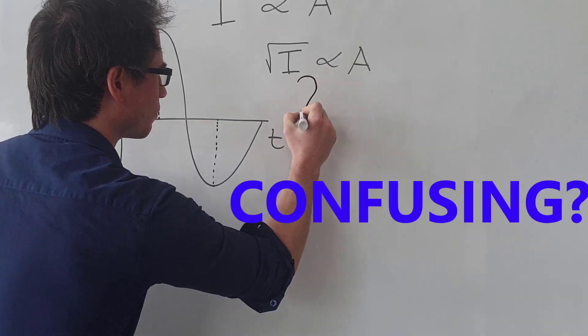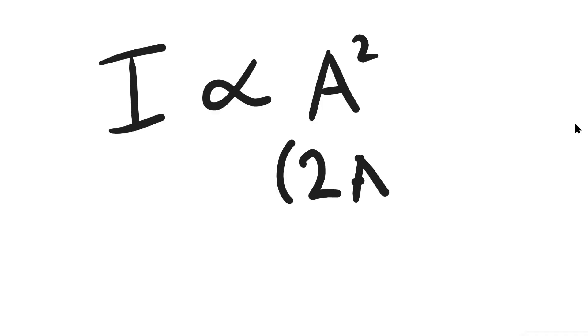Have you ever found intensity in physics confusing? Well, the intensity is proportional to the amplitude squared, meaning that if I double the amplitude, I'm going to quadruple the intensity.